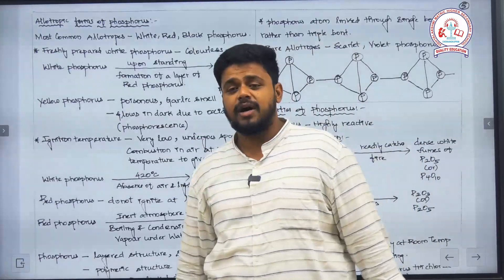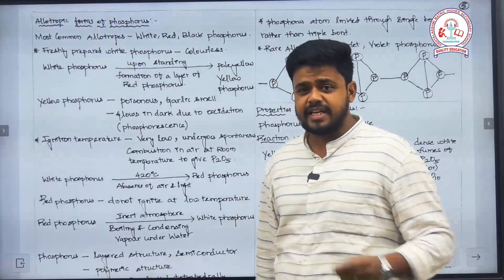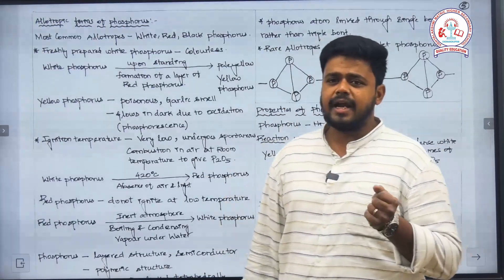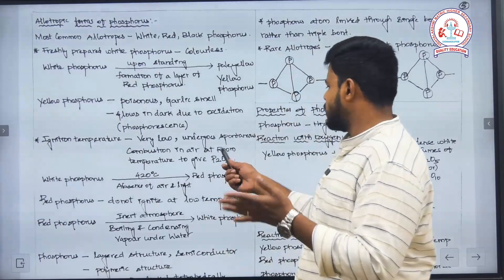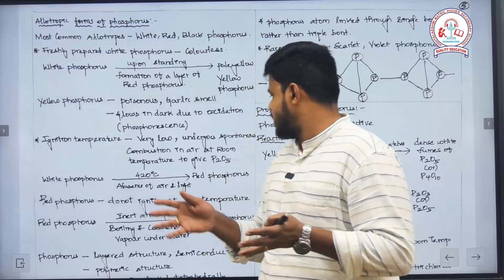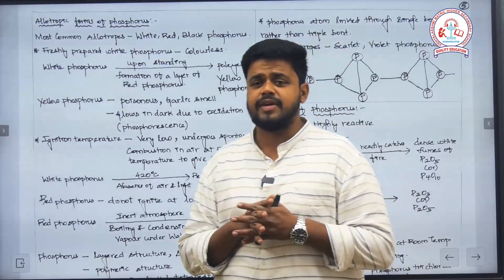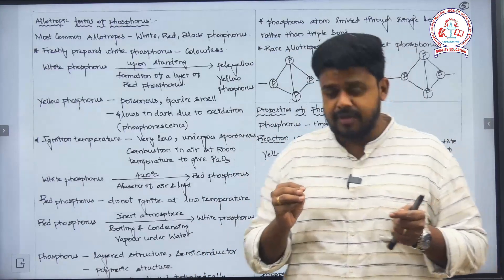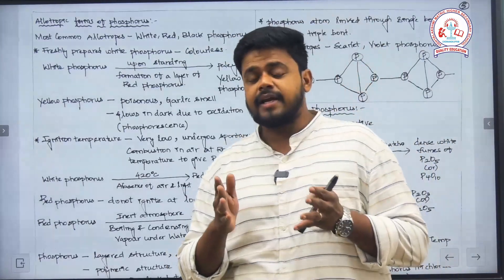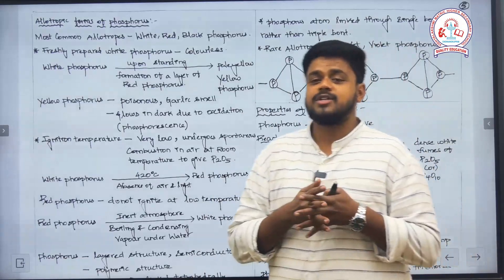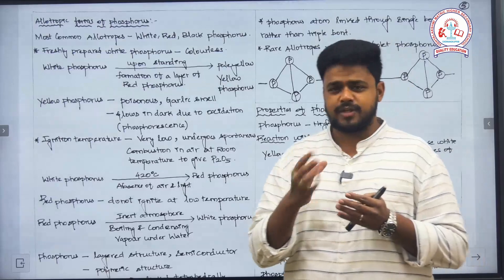The whole process is called phosphorescence. The ignition temperature of white phosphorus is very low, which means it ignites at very low temperature and undergoes spontaneous combustion at room temperature itself to give phosphorus pentoxide, P2O5 or P4O10. Since the ignition temperature is very low, it has an ability to undergo the combustion reaction at room temperature to give phosphorus pentoxide.